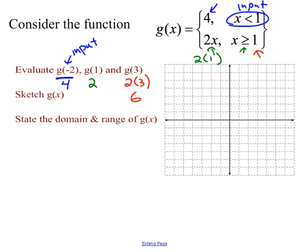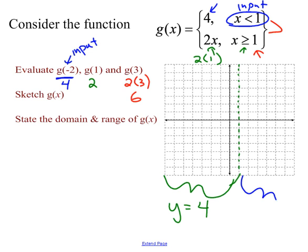I can sketch a graph for this. The boundary is at x equals one, splitting the graph into two halves. This is not an asymptote — in the left half I'll use y equals 4, and in the right half I'll use y equals 2x.